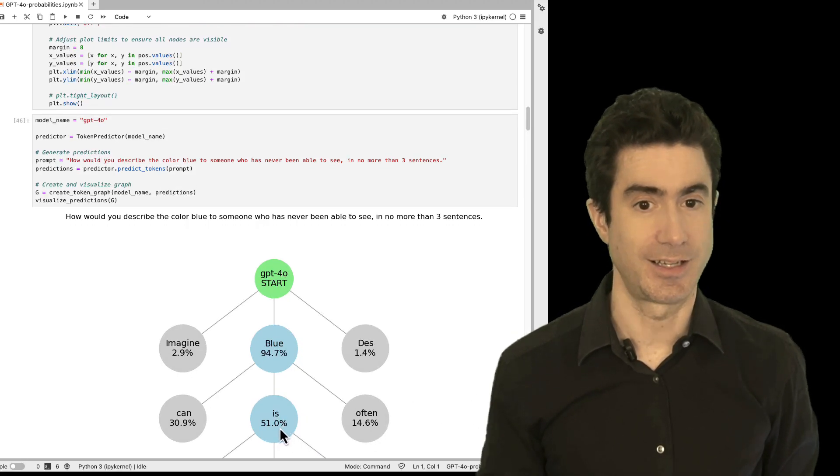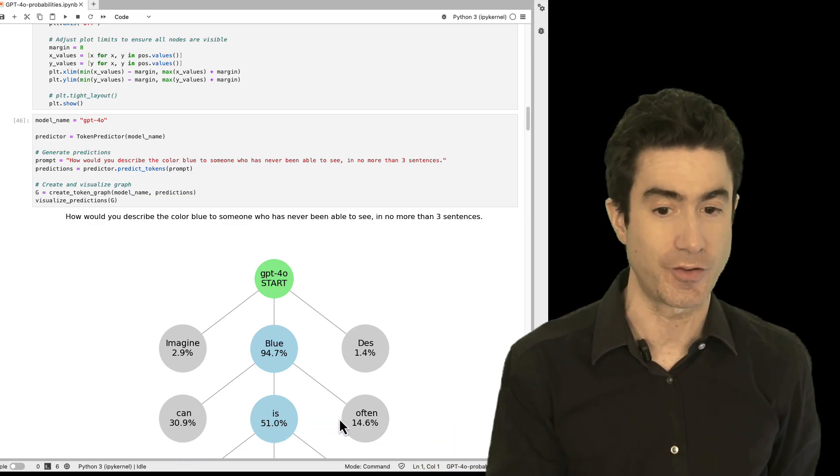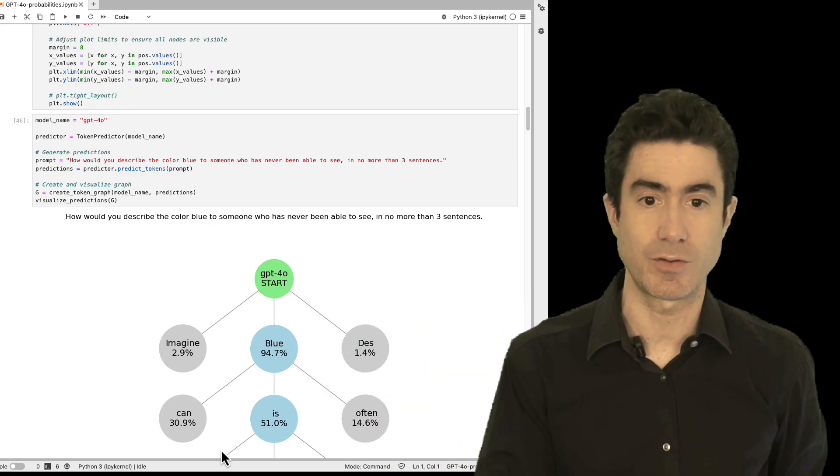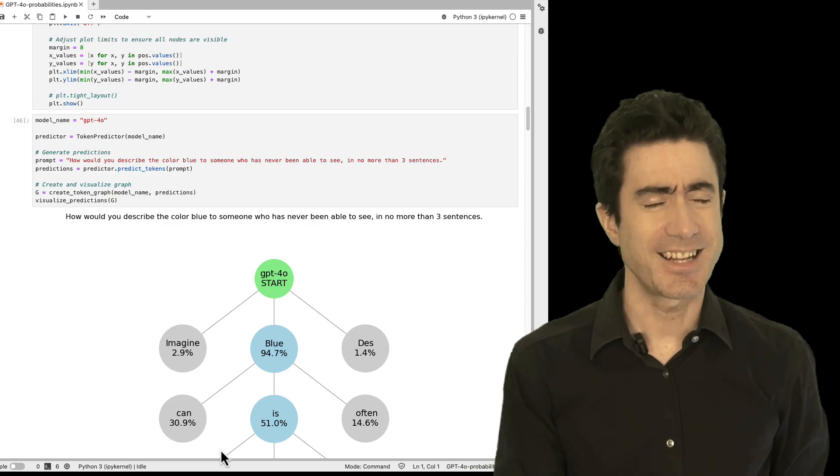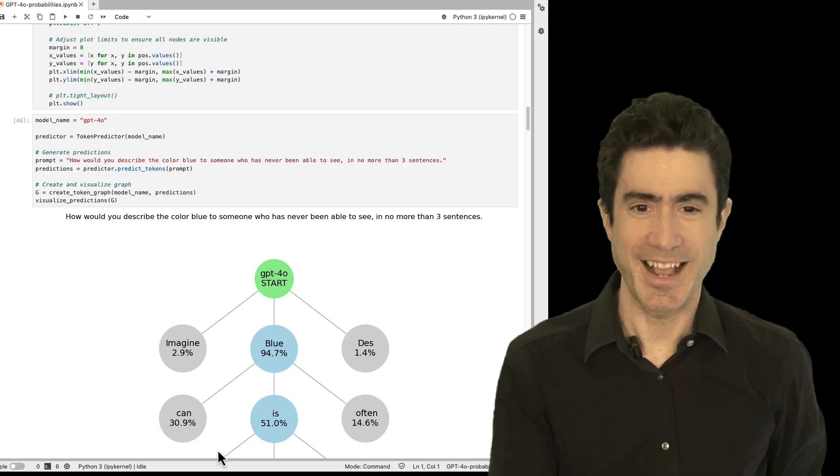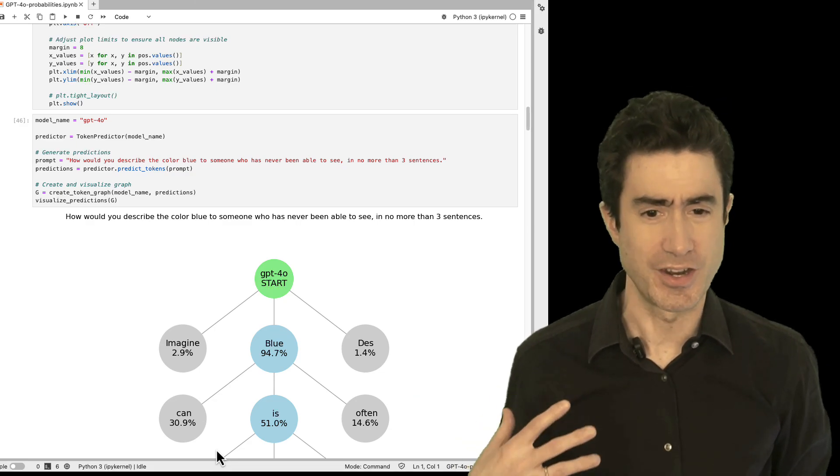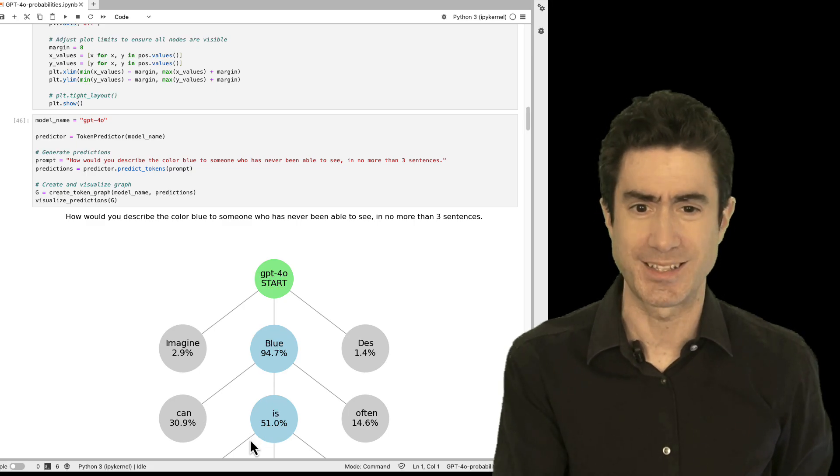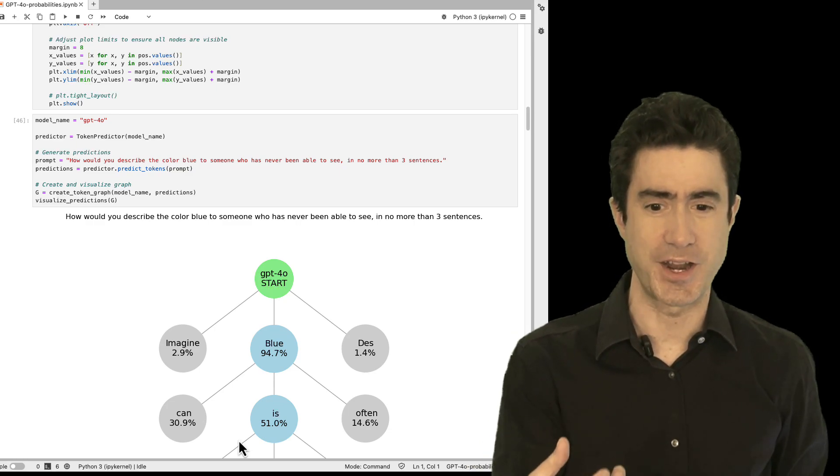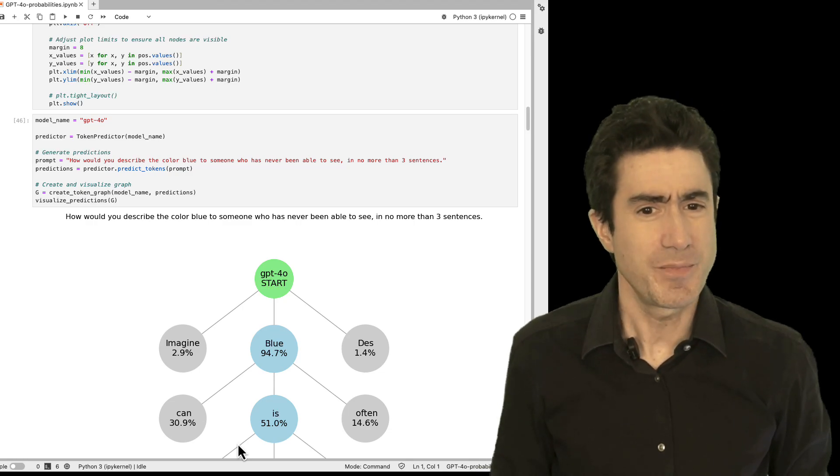And you can see that IS is the one that gets the highest probability but there are other candidate words as well. There's can and there's often because this could be blue is, blue can or blue often would all be possible continuations of that answer. And I'm hoping you're starting to feel like this is slightly less magical because you can actually imagine a kind of weighted parameterized algorithm that maybe with enough examples would start to give higher probabilities for words like this and indeed if you were on your phone and writing a text message and you were being prompted for the next word after typing something like imagine or blue and you saw IS or often you wouldn't be that surprised.